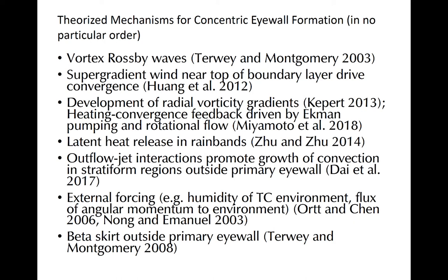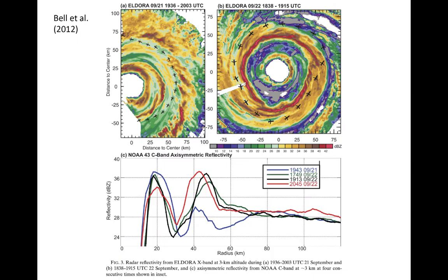The rest of this module will show a few examples of eyewall replacement cycles. Eyewall replacement cycles can also be seen from radar as well as the passive microwave examples shown earlier. However, this is only observable continuously if the cyclone is located near land or if an aircraft equipped with radar flies through the storm.